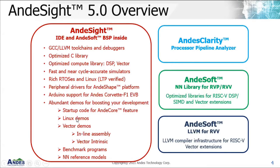In addition to that, we include a lot of demo examples for understanding the coding style and working with our CPUs — from basic functionalities like enabling/disabling cache, to demo programs for RTOS. These demos include Linux demos, startup code demos, vector demos with both inline assembly and intrinsic vector functions, and benchmark programs like CoreMark and DryStone, as well as some NN reference models.